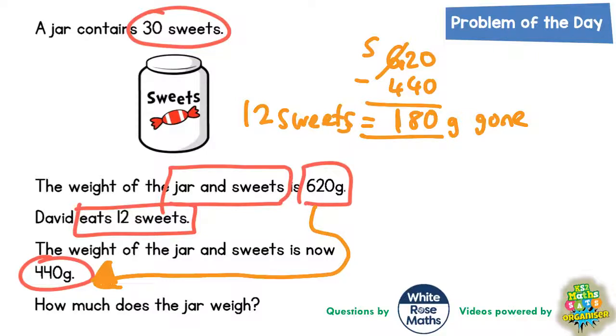So really what we need to do is figure out what 1 sweet is worth. So if we do 180 divided by 12, 12s into 1 won't go, but we haven't really used the 1 yet, so we carry the 1 to make 18. 12s into 18 goes once remains a 6, and 12s into 60 goes 5 times. So each sweet must be worth 15 grams. That's for 1 sweet.